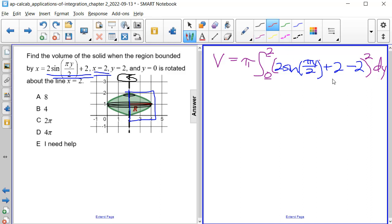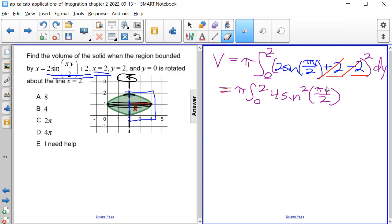So notice this plus 2 and this minus 2, they cancel each other out. That's a little bit more helpful. So then we still have pi times the integral from 0 to 2, and if we take this square and distribute it through, we're going to have a 4 and then sine squared of pi times y divided by 2. And we're going to rewrite this y to make it look more clear.